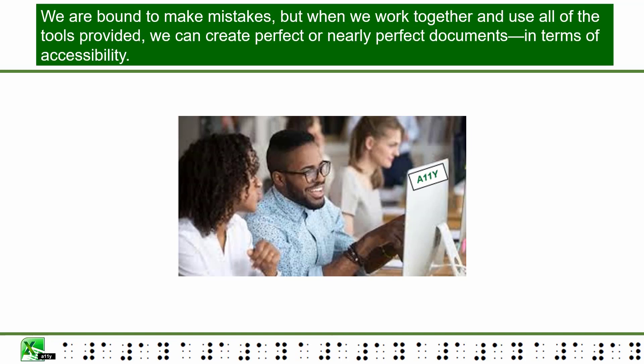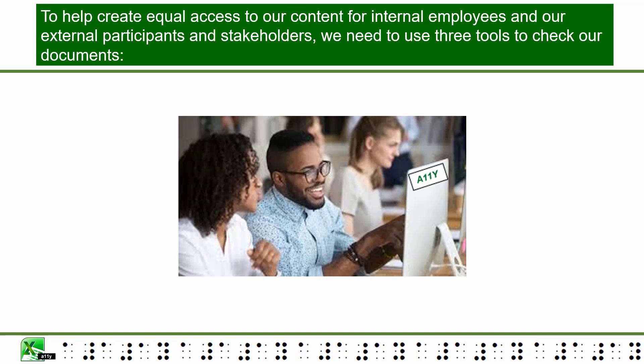We are bound to make mistakes, but when we work together and use all of the tools provided, we can create perfect or nearly perfect documents in terms of accessibility. To help create equal access to our content for internal employees and our external participants and stakeholders, we need to use three tools to check our documents.